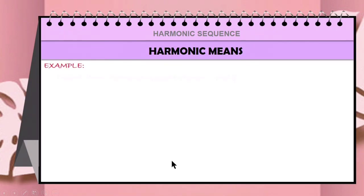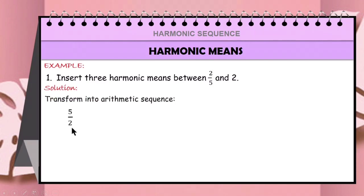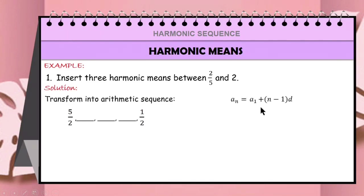Example: Insert 3 harmonic means between 2/5 and 2. We need to transform this into an arithmetic sequence by getting its reciprocals. The reciprocal of 2/5 is 5/2, and the reciprocal of 2 is 1/2. We're going to insert 3 arithmetic means between 5/2 and 1/2. We need to solve for d using the formula, where a_n is 1/2, a_1 is 5/2, and n is 5, since we're inserting 3 arithmetic means between 5/2 and 1/2.